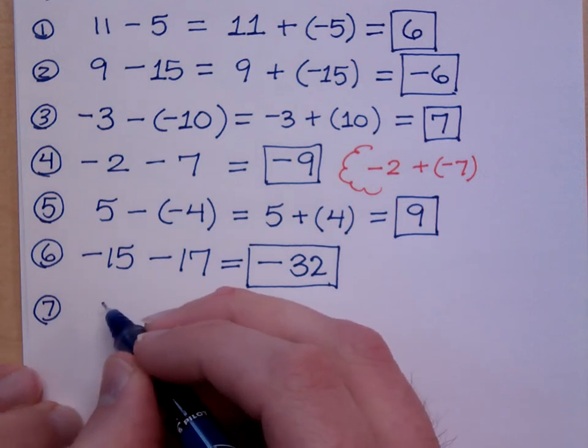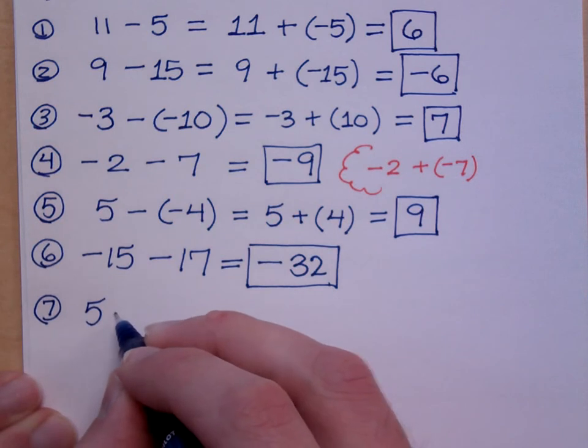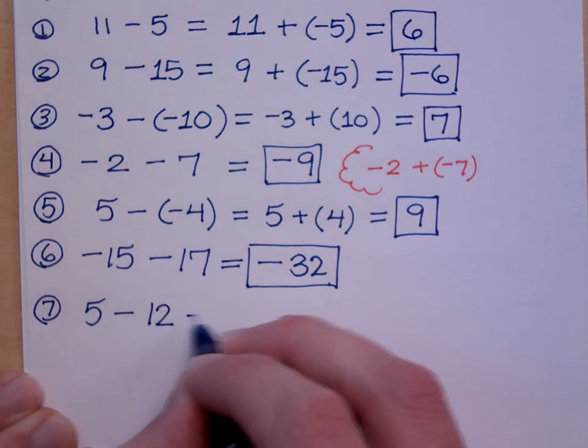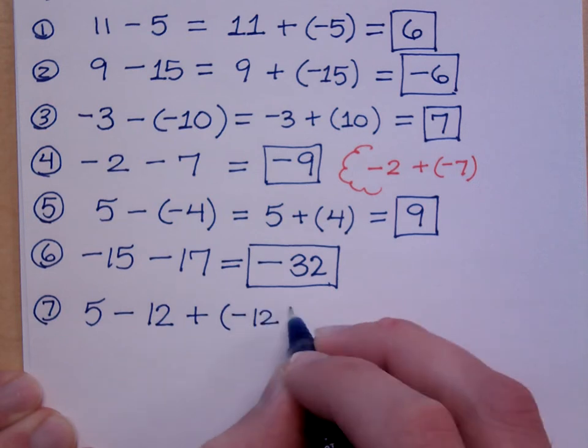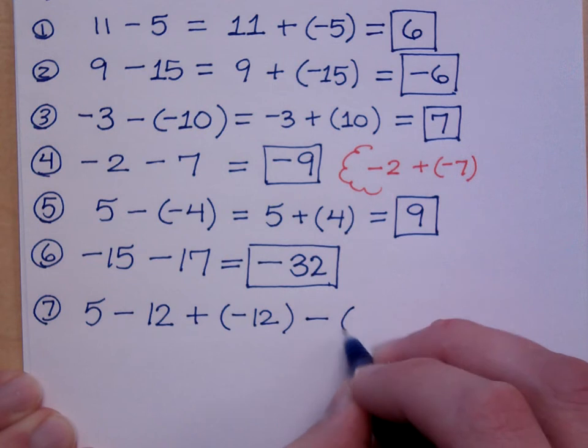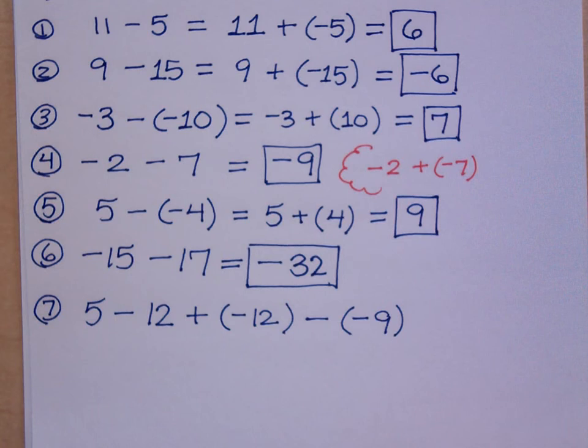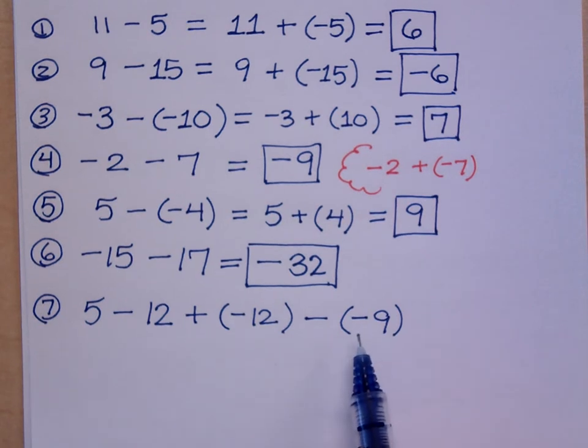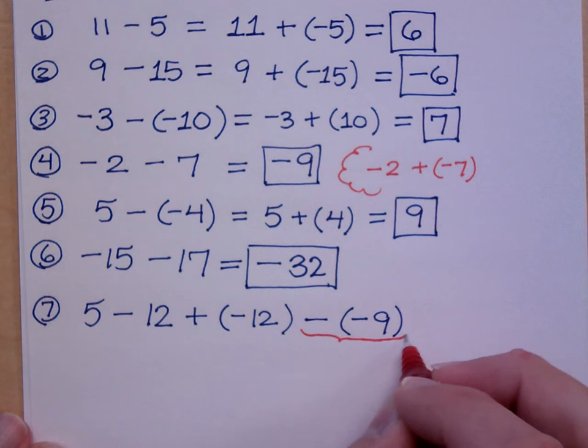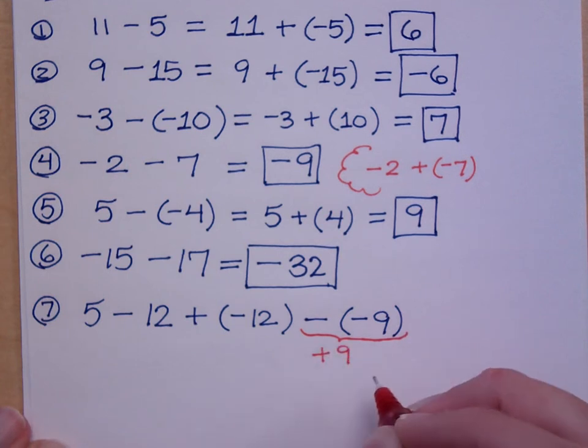So, if I have 5 minus 12 plus negative 12 minus negative 9. I've got four numbers here. I need to get a good idea about what kind of numbers I have. Are they positive? Are they negative? Now, we said before that if we're doing subtraction, we could just see that as, you know, a negative number. Unless we're subtracting a negative, right? So, we might want to rewrite this. And how does this guy get rewritten? That's really a positive 9, right? So, look at the numbers that we have here.